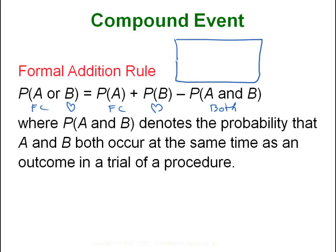Looking back at the Venn diagram picture: the probability of a face card is everything in the yellow circle, the probability of a heart is everything in the blue circle, and the probability of both is the green overlap in the middle. When you add all the yellow and all the blue, you've added that football-shaped overlap twice, so you subtract it once so everything is counted exactly once. The formula works fine, but really it boils down to being systematic when you count — count up all the face cards, then add in the hearts, or count all the hearts and then add the other face cards that aren't hearts.